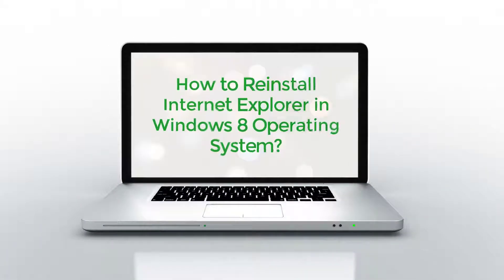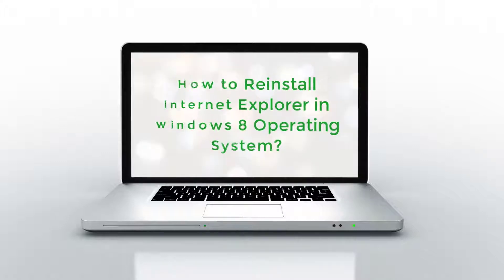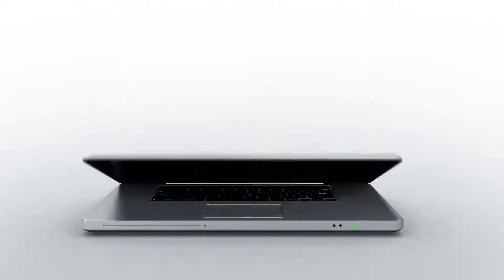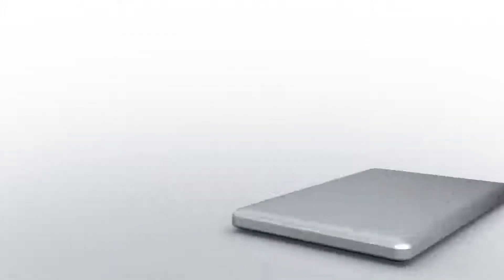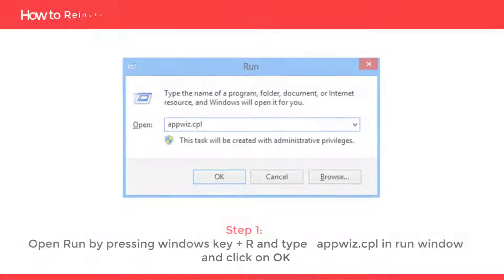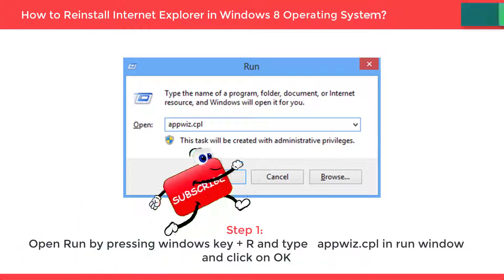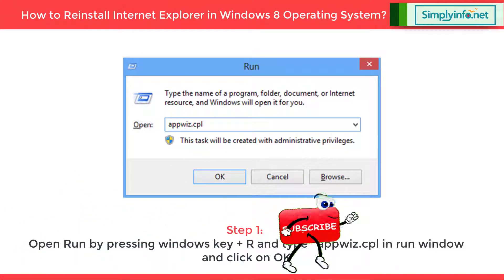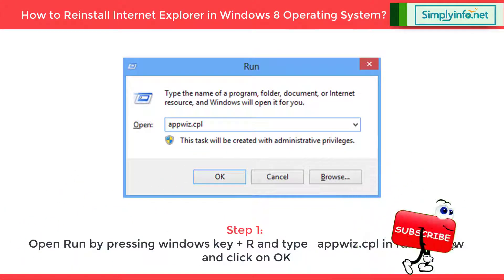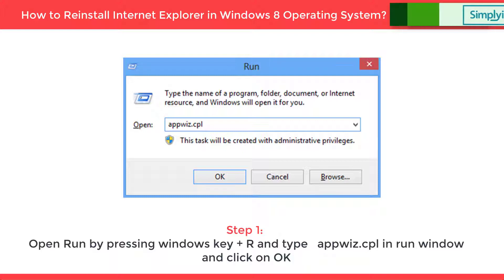How to Reinstall Internet Explorer in Windows 8 Operating System. Step 1: Open Run by pressing Windows key plus R, type appwiz.cpl in the Run window, and click on OK.